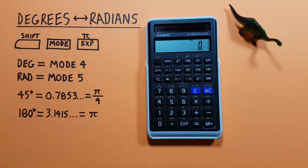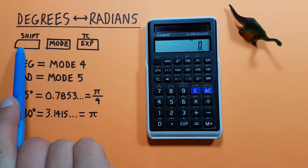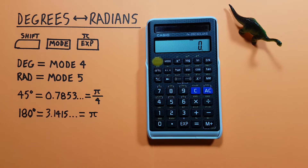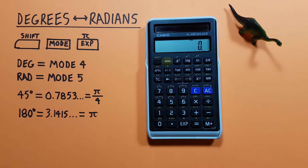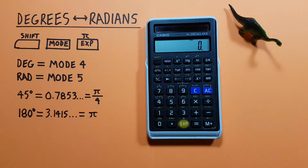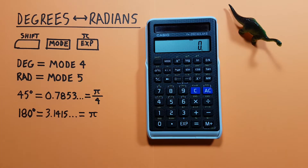Hello and welcome to HD Calcs. I'm Rick and in this video we're going to have a look at how we can convert between degrees and radians on the Casio FX260 Solar 2 calculator. To do this we'll use the shift key, the mode key, and the exp key with the shift function of pi. We also need to know that DEG or degree mode is mode 4 and RAD or radian mode is mode 5.